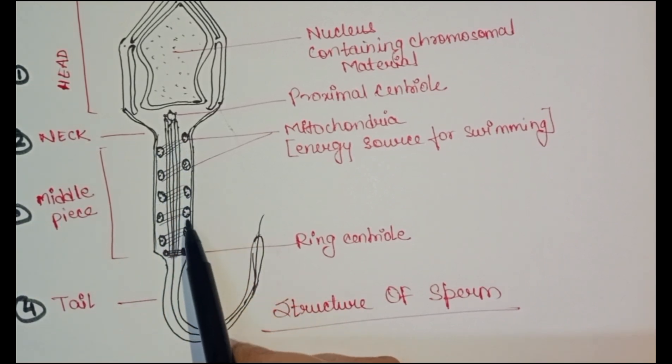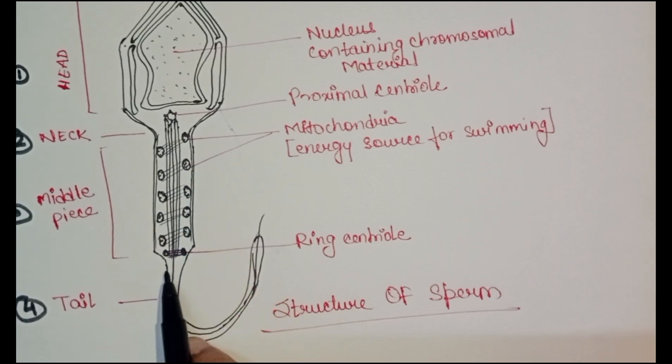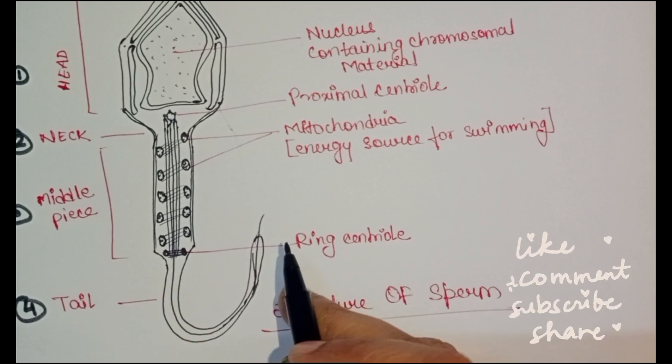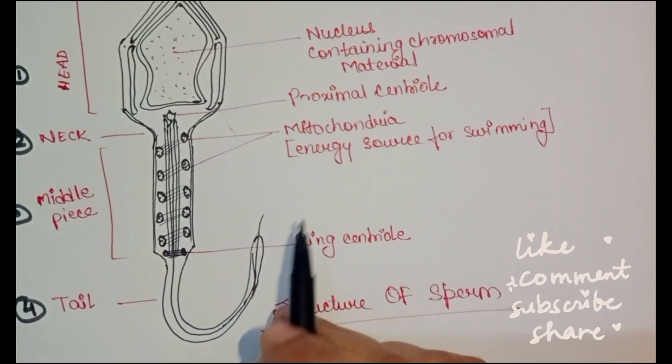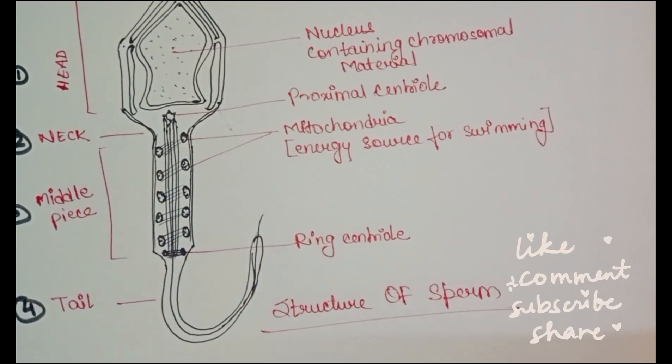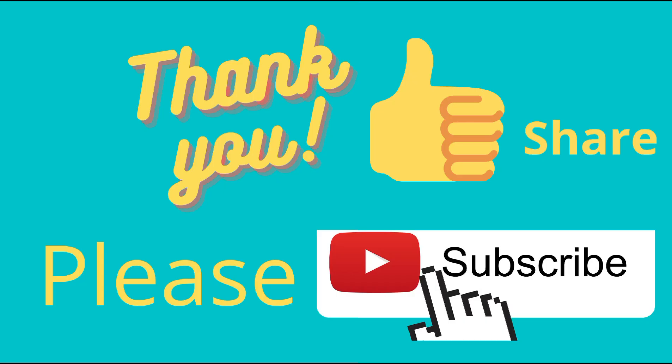These mitochondria provide energy source for swimming, and the tail helps in the motility of the sperm. So, this is the overall structure of the sperm.